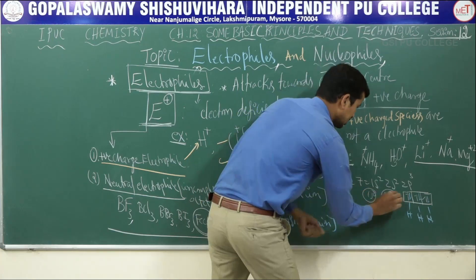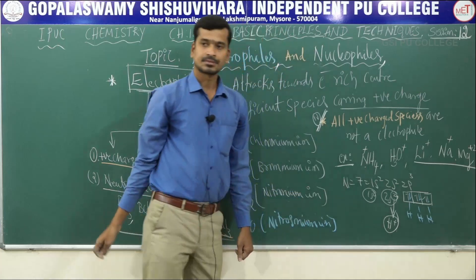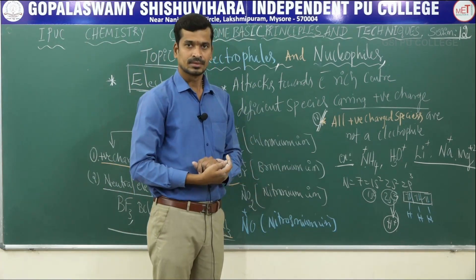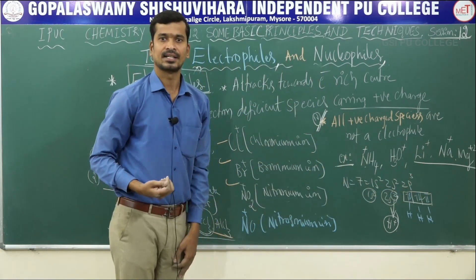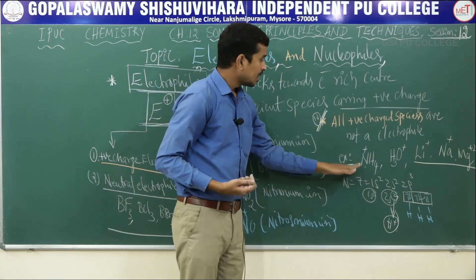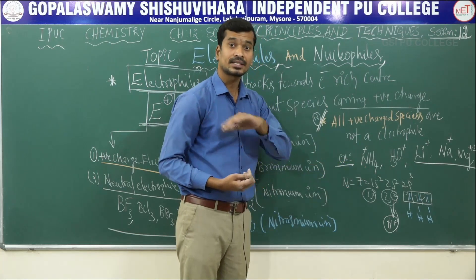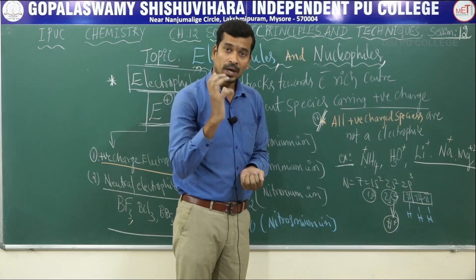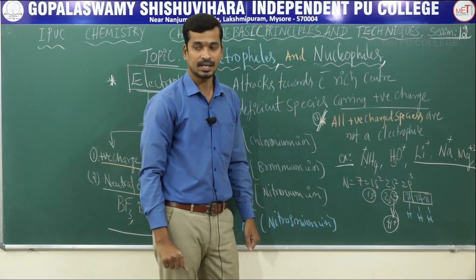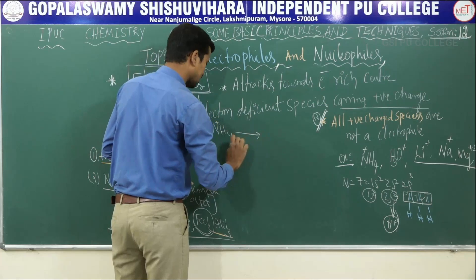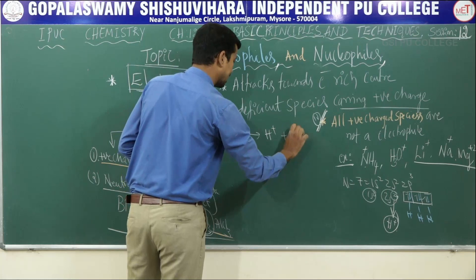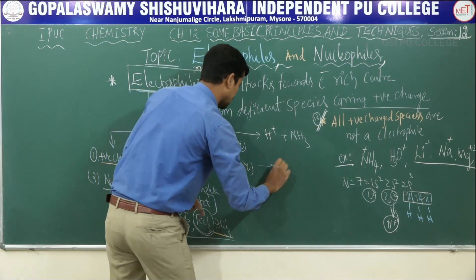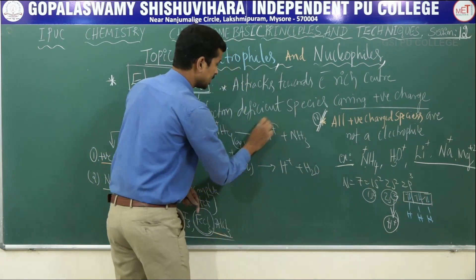Why are these not electrophiles? For nitrogen, atomic number 7, electronic configuration 1s2 2s2 2p3 — in NH4+, nitrogen forms four bonds including one coordinate bond with H+. Nitrogen is not electron deficient; it does not have a vacant orbital, but it carries a positive charge. So not all positive charges act as electrophiles. H3O+ is called hydronium ion and is not an electrophile because there is no availability of a vacant orbital to accept electrons. H+ itself is the electrophile.